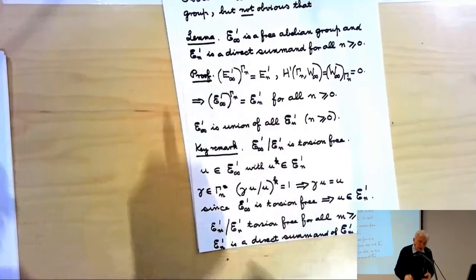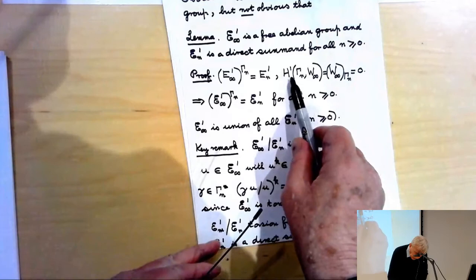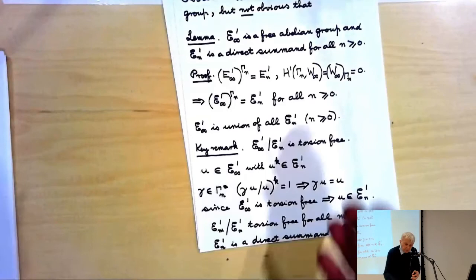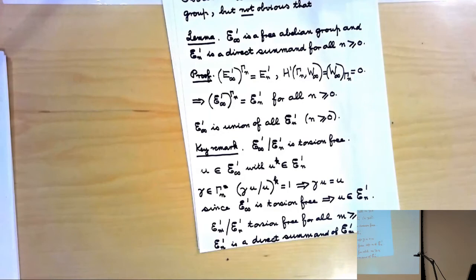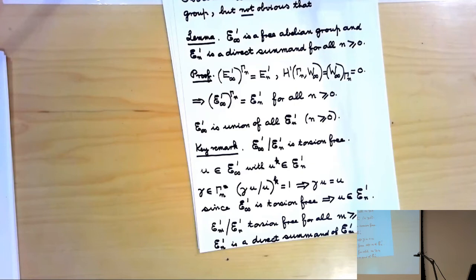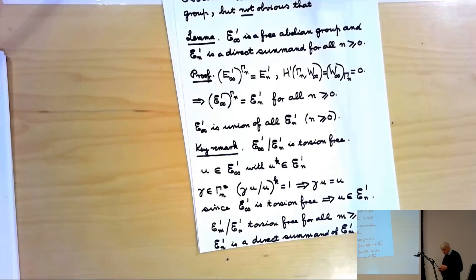The first thing we know is by the theorem of Dirichlet generalized by Chevalley to S-units, i.e., P-units: script E_n' is a free abelian group, and its rank is R2 · p^n + S_n - 1, where S_n is the number of primes of F_n above P, because they're all ramifying. What is not obvious a priori is that script E∞', while it is a torsion-free abelian group — being the union of all the E_n' — need not obviously be a free abelian group. The little lemma I'm going to prove is that it is, as remarked by Iwasawa.